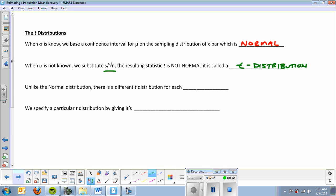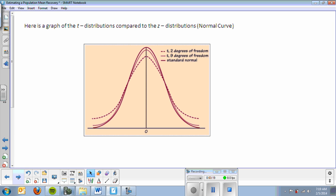Unlike the normal distribution, there is a different T distribution for each sample size. We specify a particular T distribution by giving its degrees of freedom, which is a new vocabulary term. It's very easy. It's N minus 1. If you take the sample size, you subtract 1.